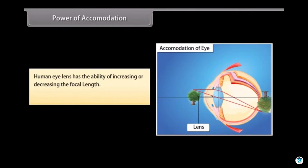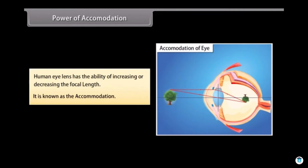Human eye lens has the ability of increasing or decreasing the focal length. It is known as accommodation. Accommodation is achieved with the help of ciliary muscles.